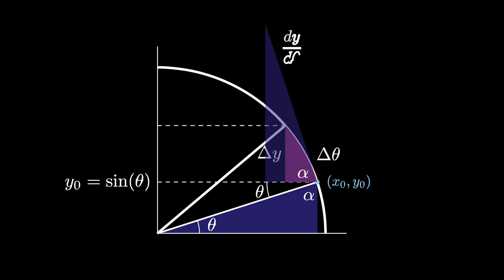Remember that dy d theta is approximately equal to delta y divided by delta theta. Because the triangular wedge region is approximately similar to the original triangle, we see that delta y divided by delta theta must be approximately equal to x0 divided by 1. But x0 is the x-coordinate on the unit circle for the angle theta, so it's given by cosine of theta.